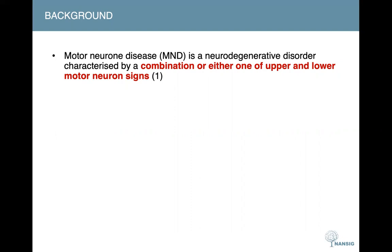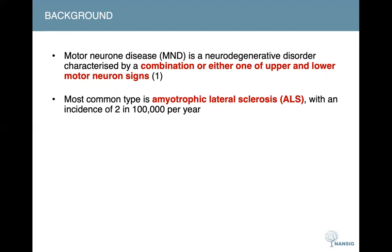The mean age of onset of motor neuron diseases is 60 years old, with a lifetime prevalence of approximately 1 in 400. Of all motor neuron diseases, the most common type is called amyotrophic lateral sclerosis, with an incidence of 2 in 100,000 per year.